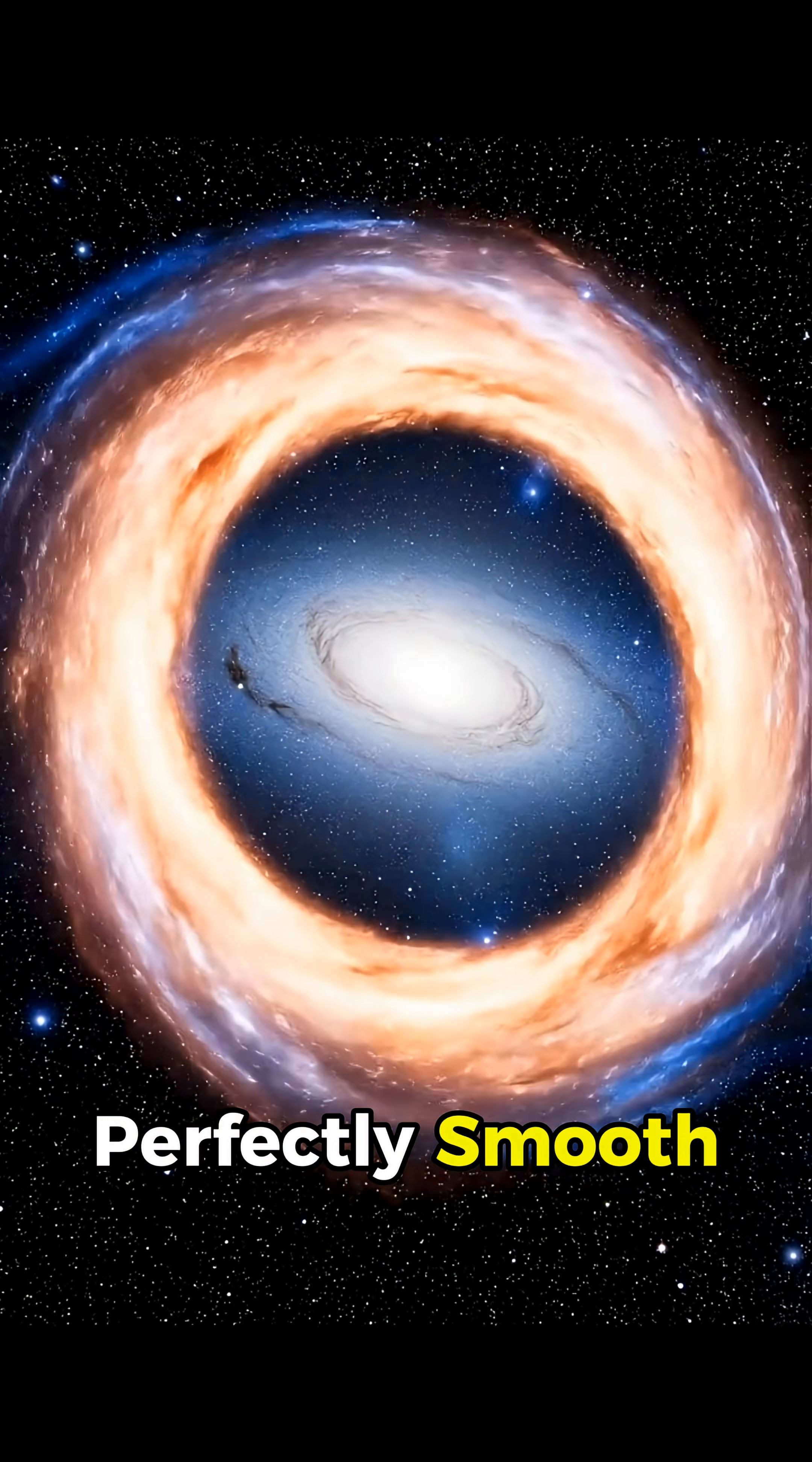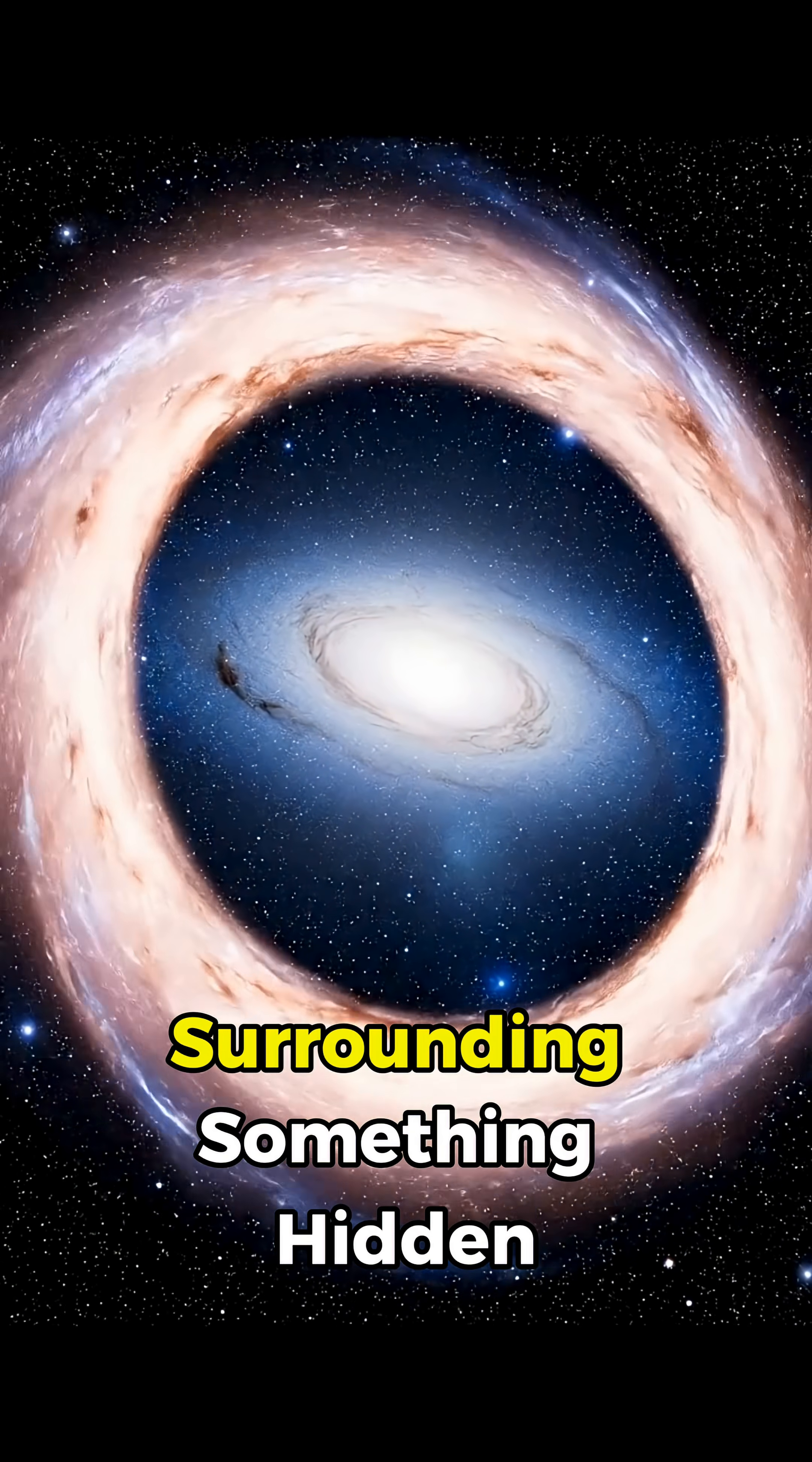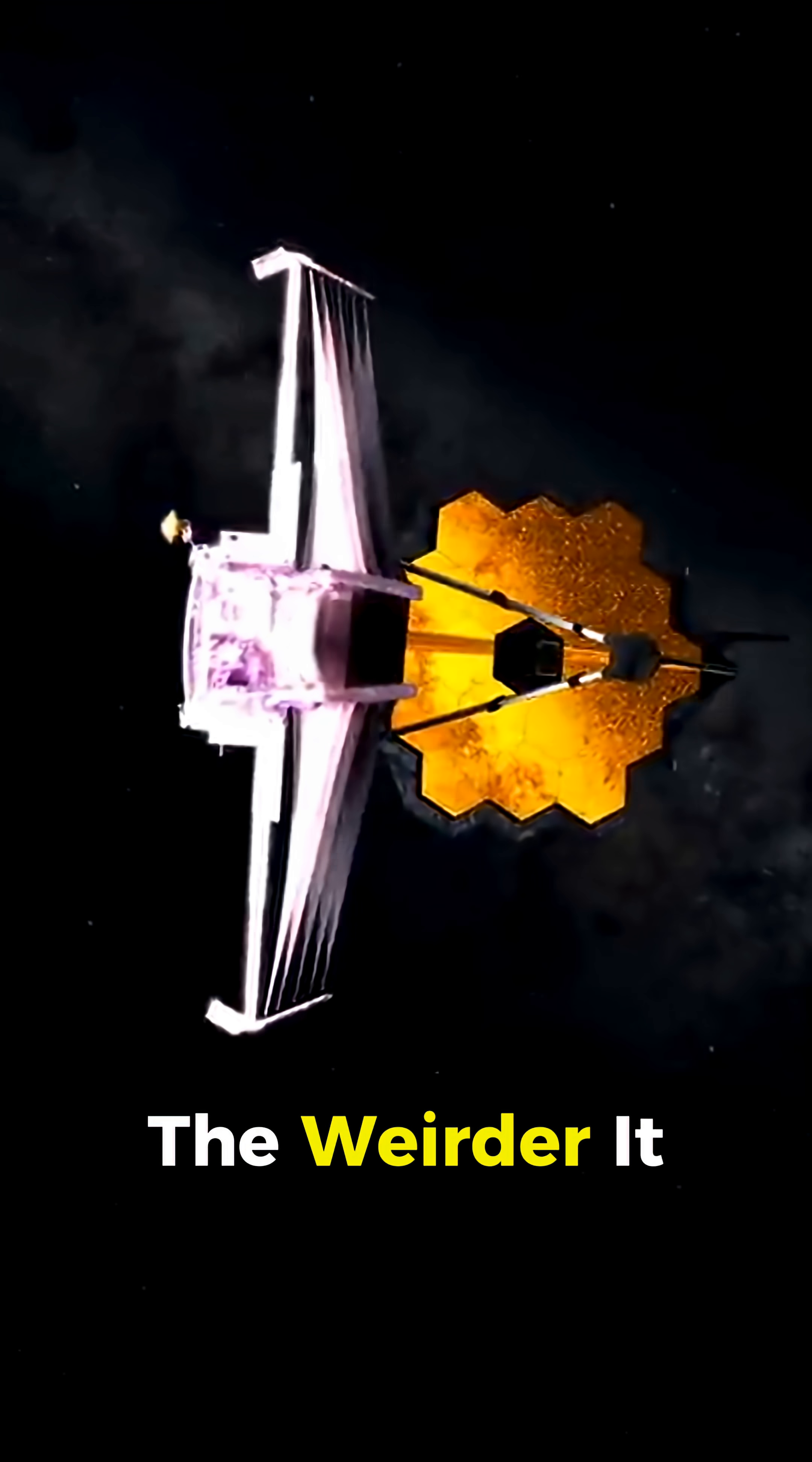Webb captured a perfectly smooth, unnaturally bright ring, almost like a cosmic halo, surrounding something hidden at its center, and the more scientists zoomed in, the weirder it got.